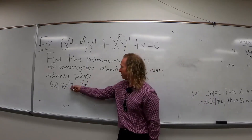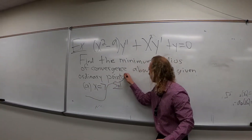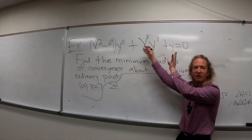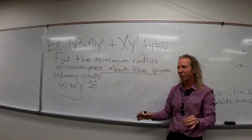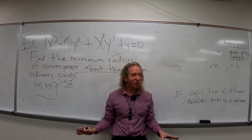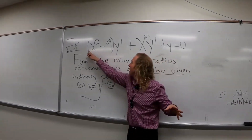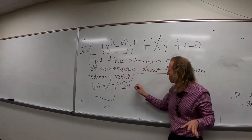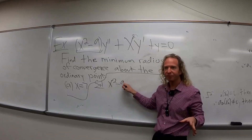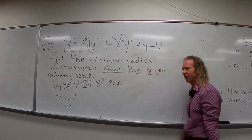This is the ordinary point. All of this is the question, right? So they give us the DE, they give us the ordinary point. So step one, we have to find the singular points. All we do is we take this and set it equal to zero. So x squared minus nine equals zero. Step one.